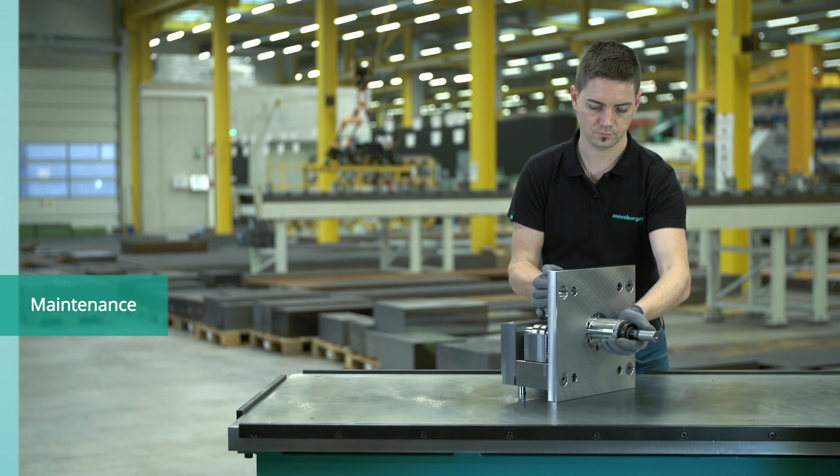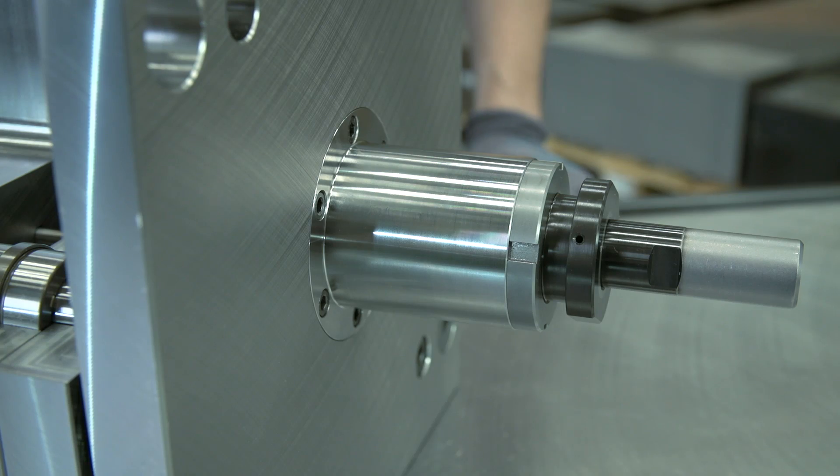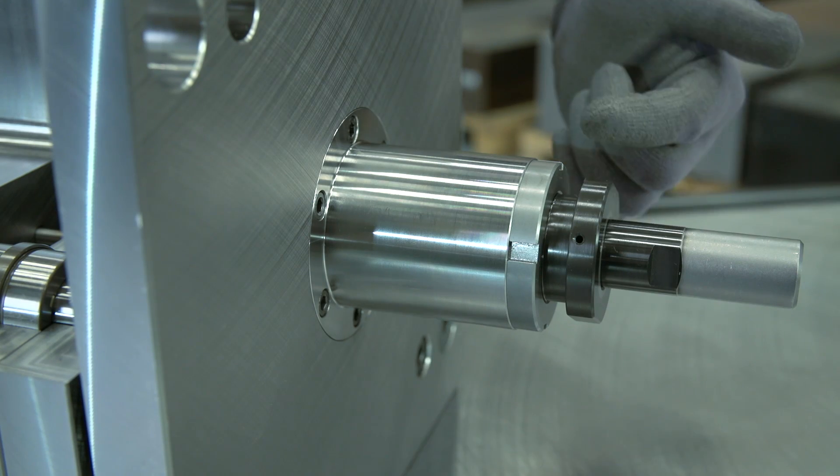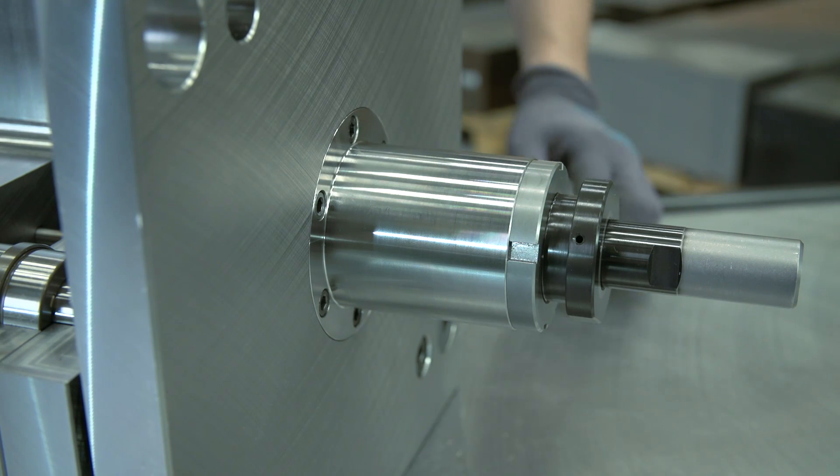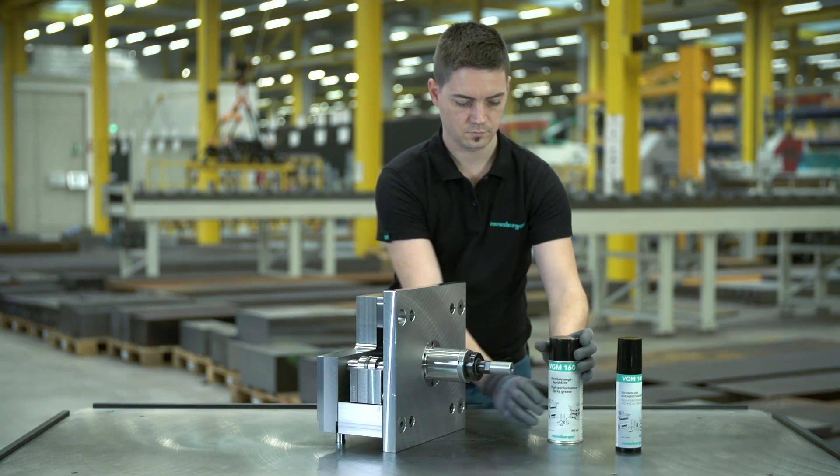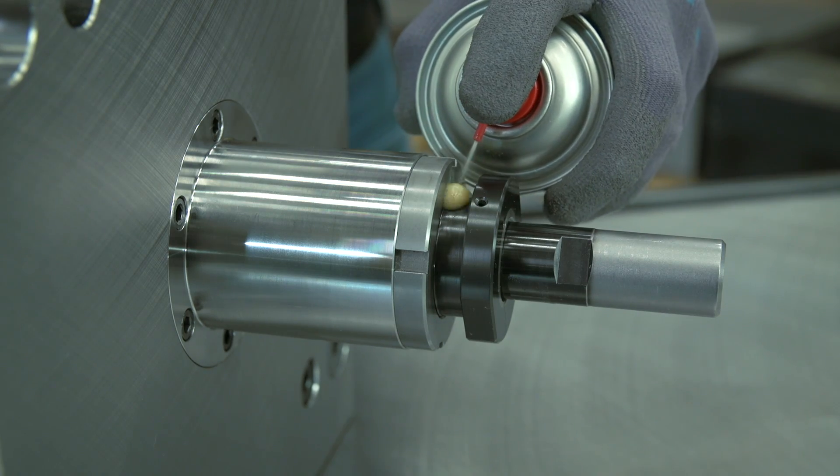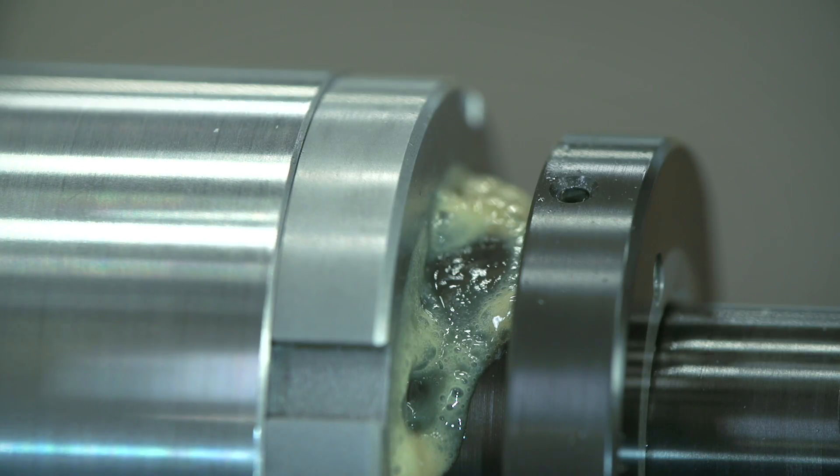The maintenance is reduced to a minimum through the DLC coating of the functional surfaces. We recommend to lubricate these every 300,000 strokes on the running surfaces of the pusher sleeve and on the provided lubricating hole.